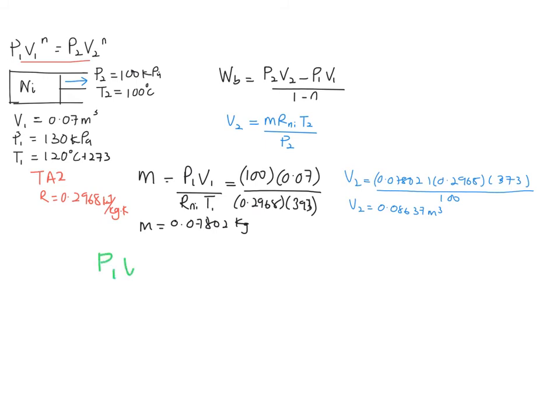So you have P1 V1 to the power of n is equal to P2 V2 to the power of n. And when you substitute all the values in, 130 times 0.07 to the power of n is equal to 100 times 0.08637 to the power of n. And when we arrange this thing, where you bring your 100 to here and this 0.07 here,